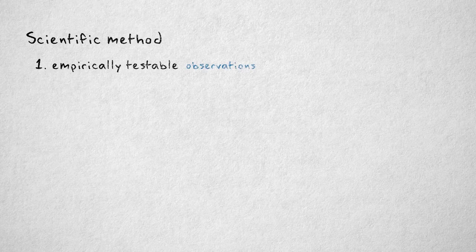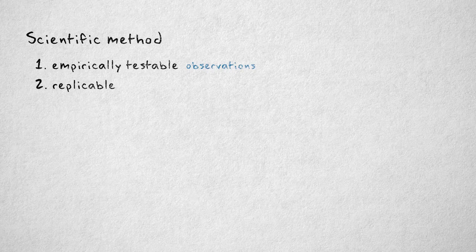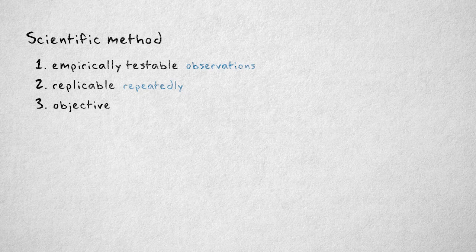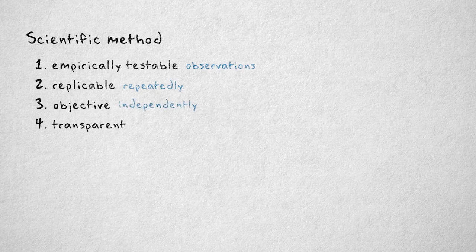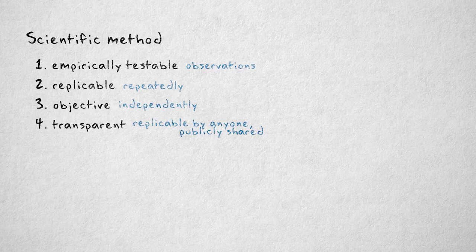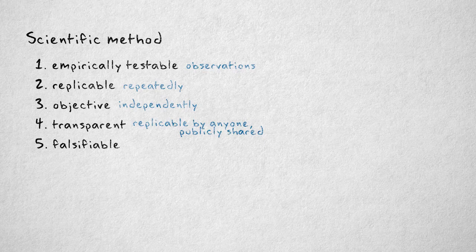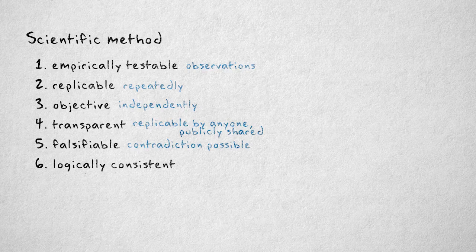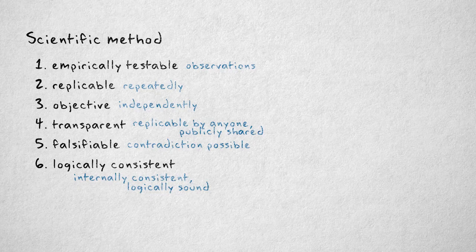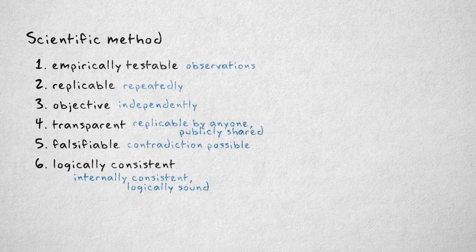So to summarize, the scientific method requires that we formulate hypotheses that are empirically testable, meaning the hypothesis can be supported or contradicted by observations. Replicable, meaning the hypothesis can be tested repeatedly. Objective, meaning the hypothesis can be tested independently by others. Transparent, meaning the hypothesis and results are publicly shared so they can be tested by anyone. Falsifiable, meaning that finding contradictory evidence is a possibility. And finally, logically consistent, meaning that the hypothesis is internally consistent, and the conclusions to support or reject the hypothesis based on the observations is logically sound.